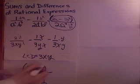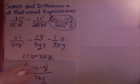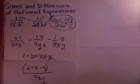The answer to this one becomes 2 minus x minus y all over 3xy. Parenthesis around the top. You cannot reduce any of those parts down here unless you can factor a common factor out. It doesn't factor.